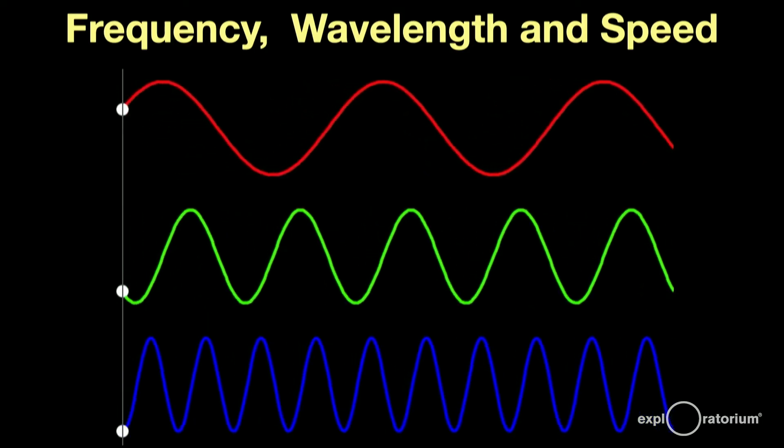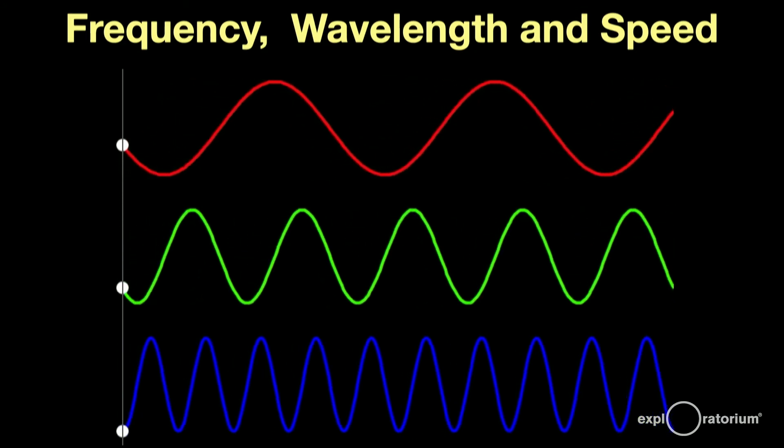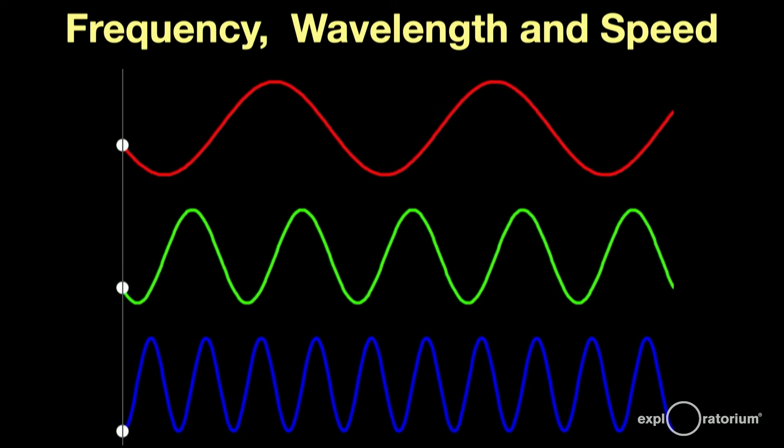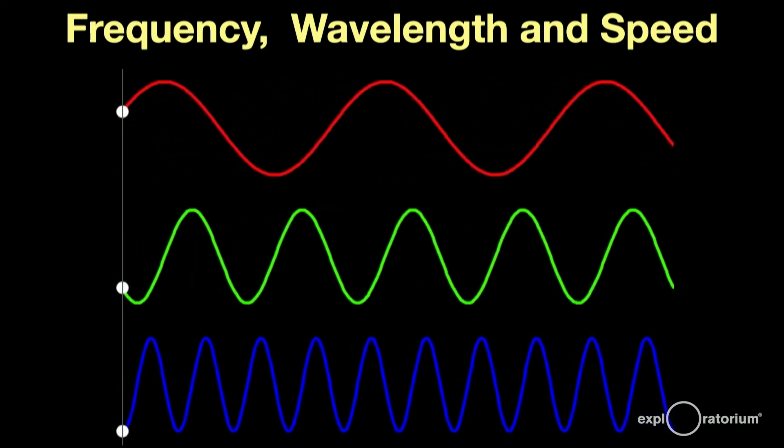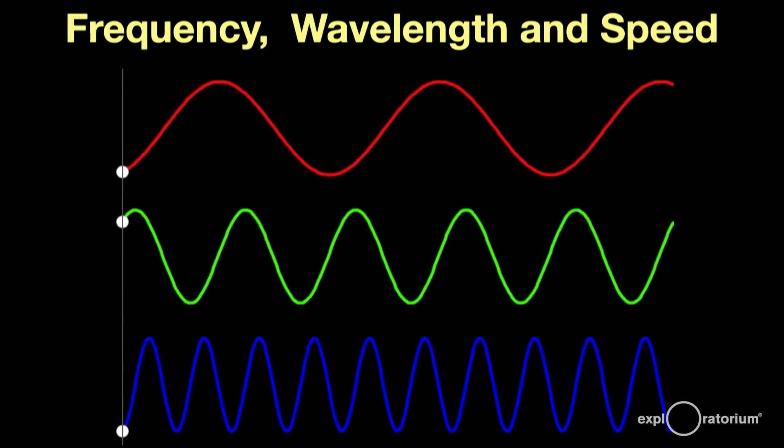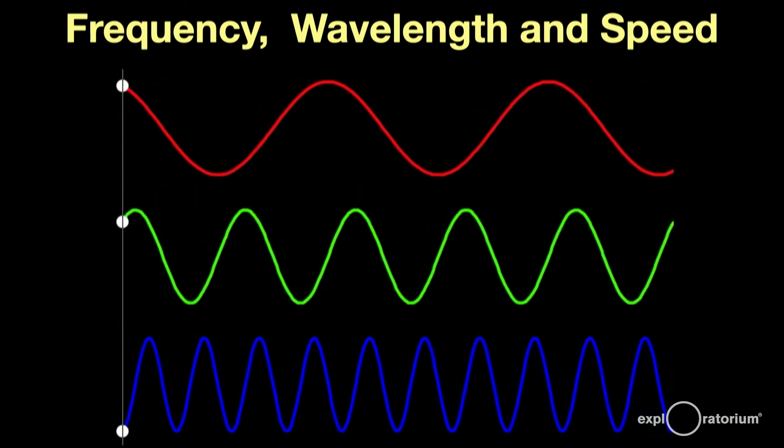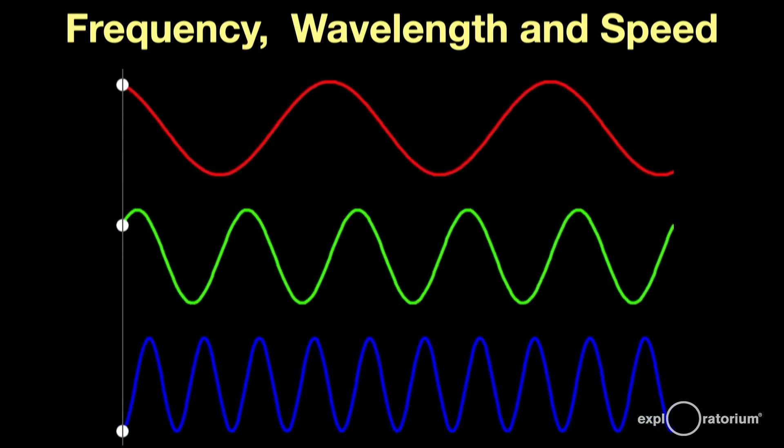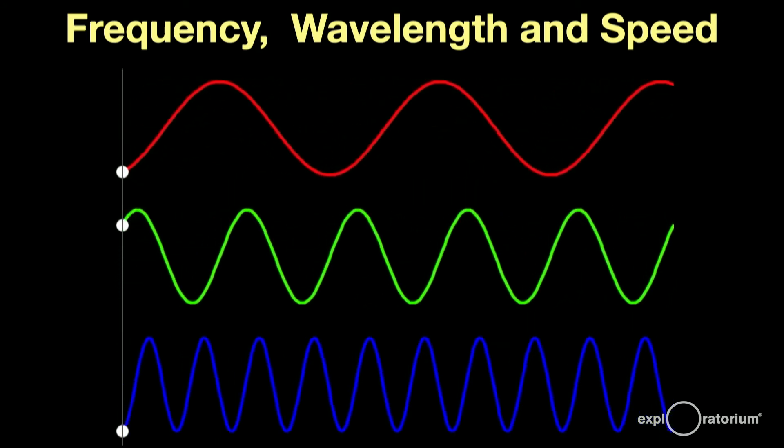All light waves travel at the same speed, the speed of light. That means that the slower vibrating light, red, produces long wavelength waves, and faster vibrating light, blue and violet, produce shorter wavelength waves. There's a simple, direct, and proportional relationship between the frequency and the wavelength.